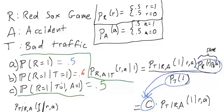So if we know that there was traffic, and we know that there was an accident, then it's more likely that the traffic was caused by the accident. So this is called explaining away. Where once we observe one explanation, that is, the accident, our belief in a different explanation, the Red Sox game, goes back down.